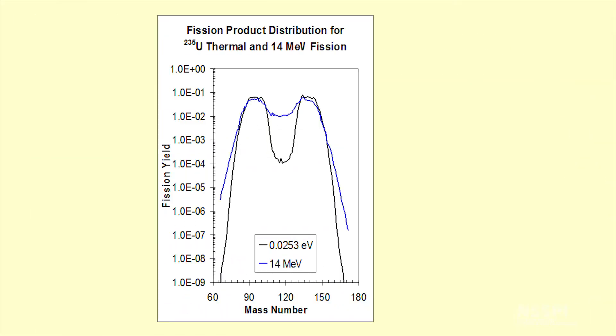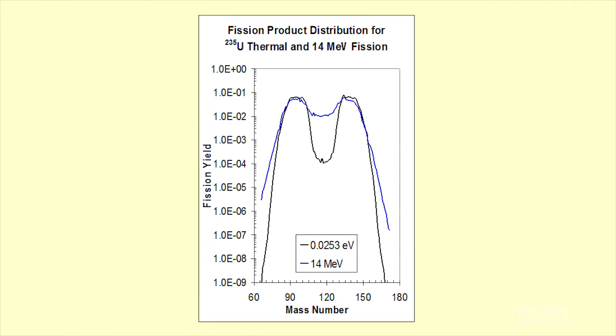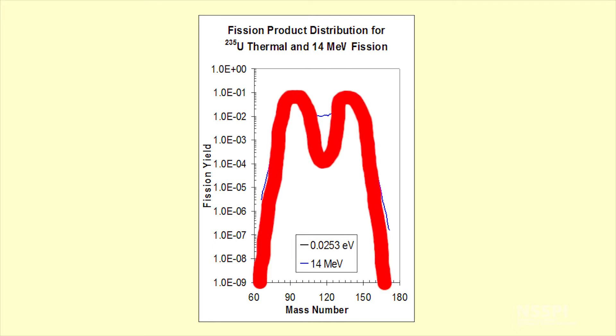The distribution of these isotopes you get is somewhat odd. As a function of mass chain, you get this what they call a characteristic double-hump curve, which is a very non-uniform distribution where principally most of the fission products that are produced have masses around 90 amu or 150 amu.